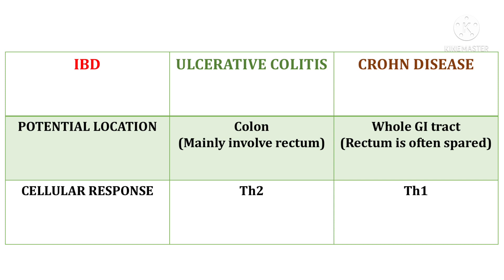When we talk about the cellular response, type 2 T helper cells are responsible for ulcerative colitis, whereas for Crohn's disease, type 1 T helper cells are responsible.